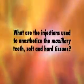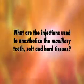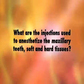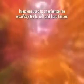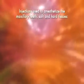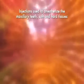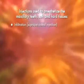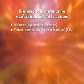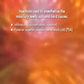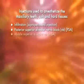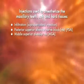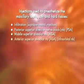We will now discuss the injections which provide anesthesia to the maxillary teeth, the supporting hard and soft structures. These include: infiltration or supraperiosteal injection, posterior superior alveolar nerve block, middle superior alveolar nerve block, and anterior superior alveolar nerve block.